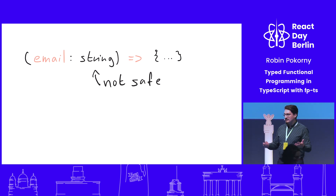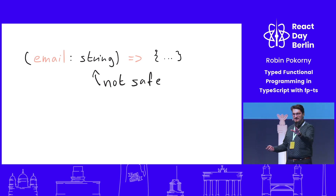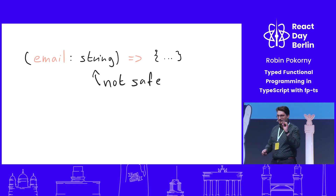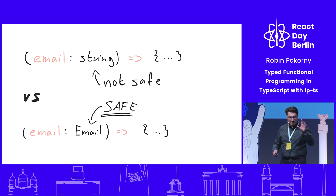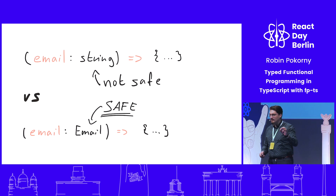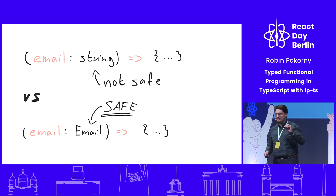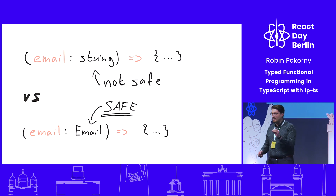What would you do if it's not an email — will you throw? Will you destroy your application? I have a solution. It will blow your mind — it did mine. I can create a type which makes sure this function is always called with a valid email address, and I can know it at compile time.